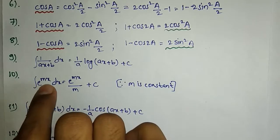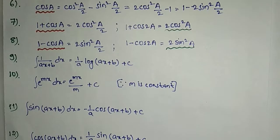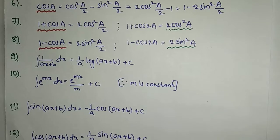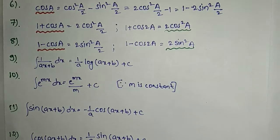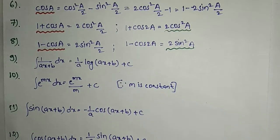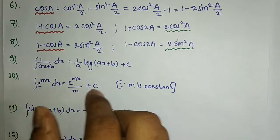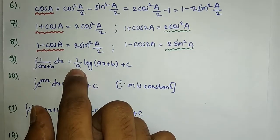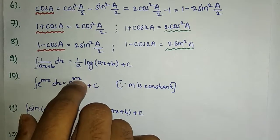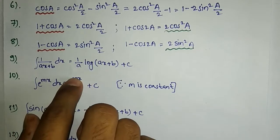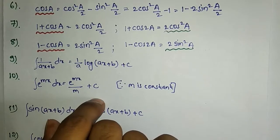Integration of e^(mx) dx equals e^(mx)/m plus C. The basic formula is ∫e^x dx = e^x + C. Here, m is a constant. The inner derivation of mx gives m, so m goes to the denominator, giving e^(mx)/m plus C.